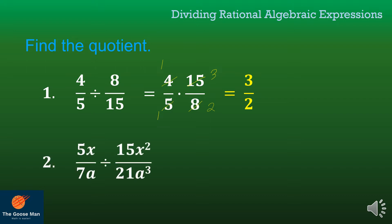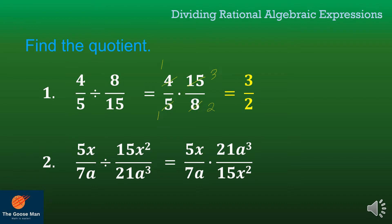Next example: 5 over x all over 7a, divided by 15x squared all over 21aq. I'll copy 5 over x all over 7a, division now becomes multiplication, and get the reciprocal, so we have 21aq all over 15x squared. Now, 5x and 15x squared are divisible by 5x: 5x divided by 5x is 1, and 15x squared divided by 5x is 3x.